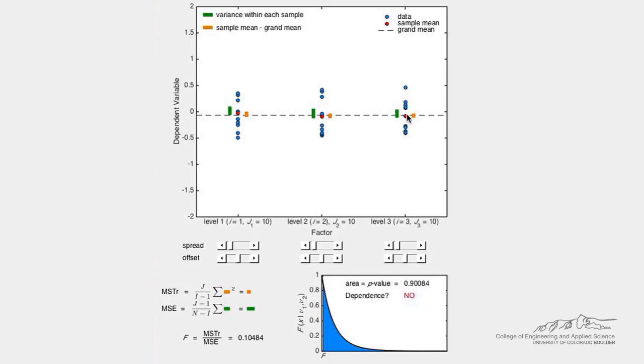Now let's calculate the grand mean, also known as the mean of the sample means, indicated as the black dashed line on the plot. Next, let's calculate the variance within each experiment, shown visually with the green bars.